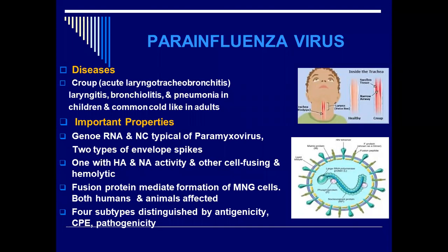There are two types of spikes on the parainfluenza virus. One spike has hemagglutinin and neuraminidase activities, while the other spike has the fusion protein with hemolytic activity. So two different spikes are present on the surface of the virus: one with hemagglutinin and neuraminidase activities, and the other with cell fusion and hemolytic activities.